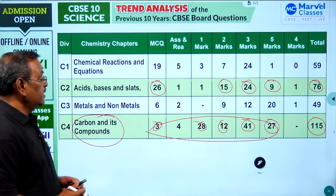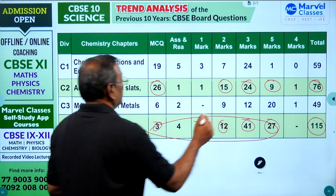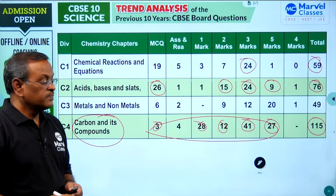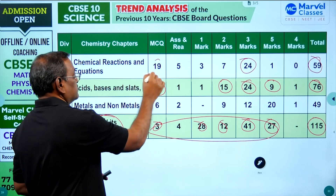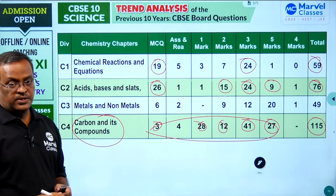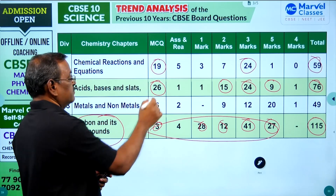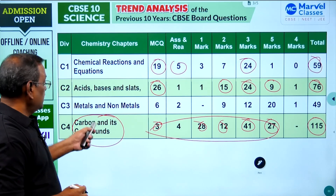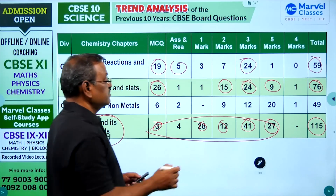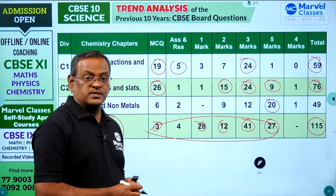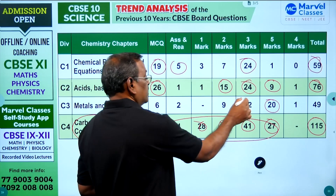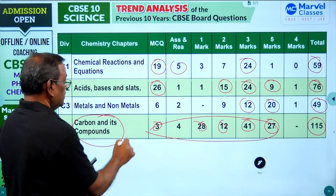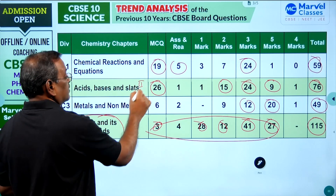The next important chapter is Chemical Reactions and Equations, with a total of 59 questions — 24 questions from section C and 19 questions from the MCQ section. The last chemistry chapter, Metals and Non-Metals, has 49 questions total, including 20 five-mark questions and 12 three-mark questions.